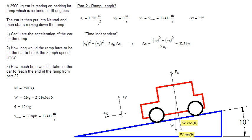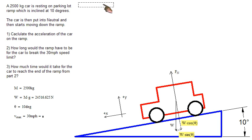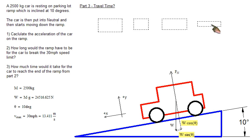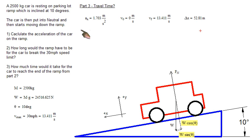Moving on to part three. Part three, how long, or how much time has elapsed when it reaches 30 miles an hour? So how long did it take to get to the end of that ramp? How long did it take to reach, to go 52 meters? So from before, we have our known information. We have our acceleration, we have our initial velocity, we have our final velocity, and we have our distance traveled.